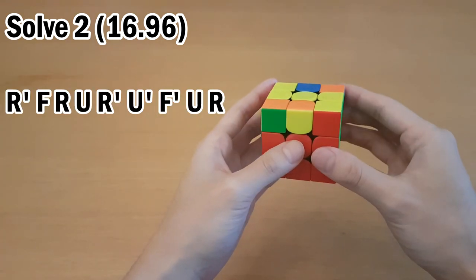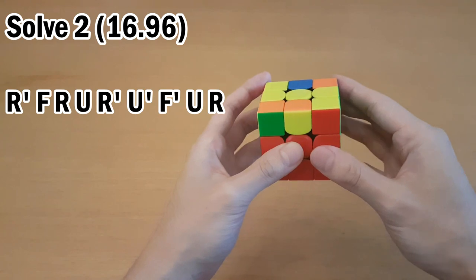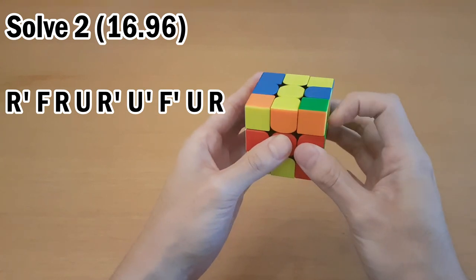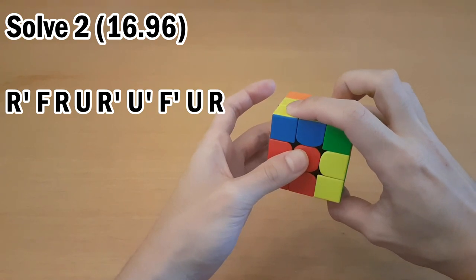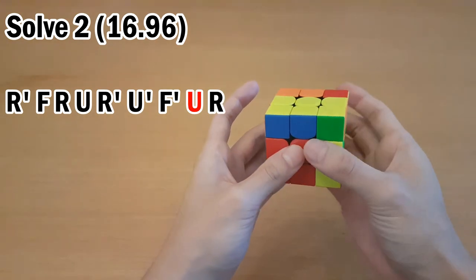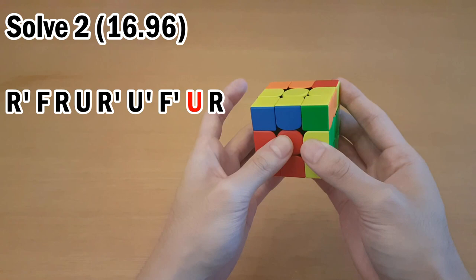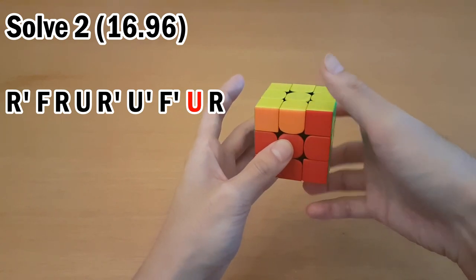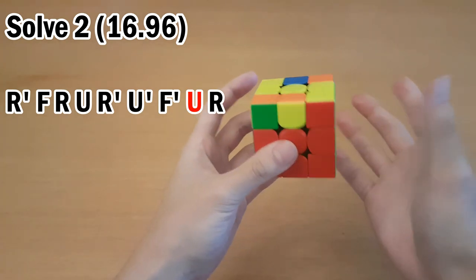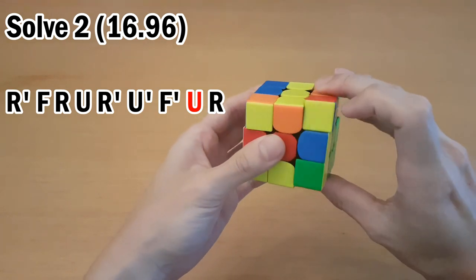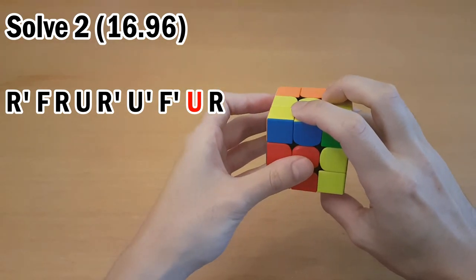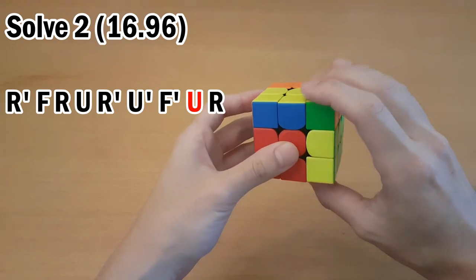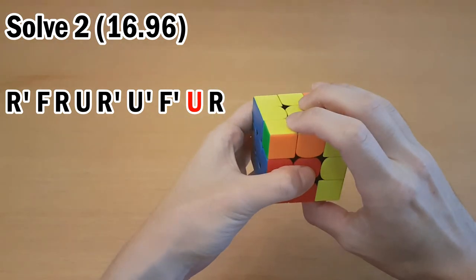Afterwards, you had this OLL, and the finger tricks could be a little bit better. This F' is good as it doesn't require a re-grip, but then afterwards, you re-gripped anyway. And this re-grip is not very good because after U R, you have to re-grip down again. A better finger trick for this is to do the same things up until the F', and then afterwards, you do U with your left hand, and that solves the problem of having to re-grip your right hand. So U like this, and then R.